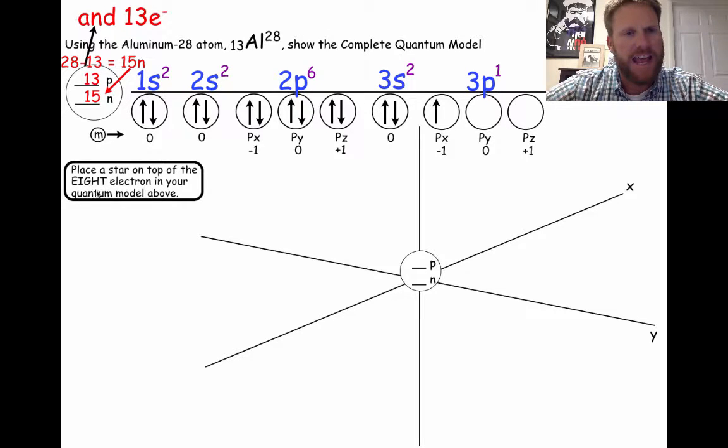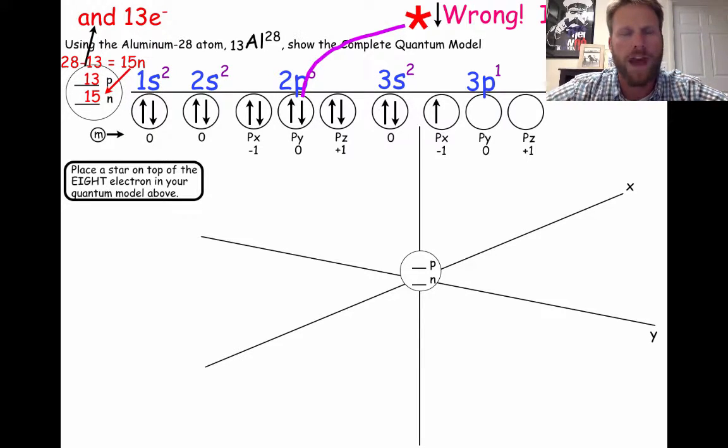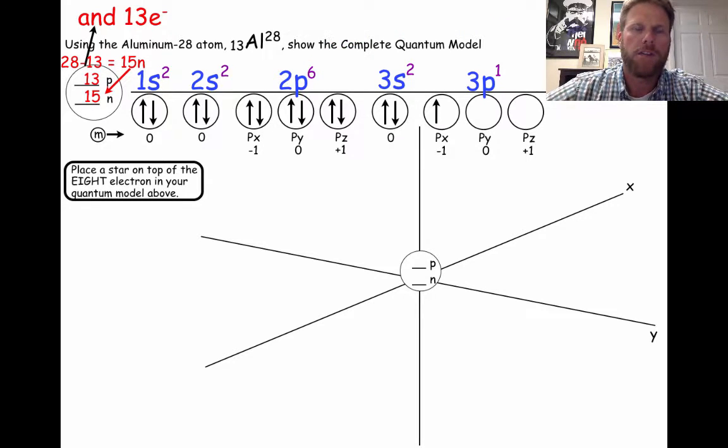Now when we designate the eighth electron, don't be fooled. Here's the common mistake that's made. Kids will put a star above this one, and that is wrong, because you're forgetting that when you get to the p orbitals, you add the up arrows first, and then you come back and do the down arrows. So you actually have 1, 2, 3, 4, 5, 6, 7, and the 8th electron is the first down arrow in the 2p orbital.